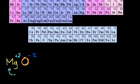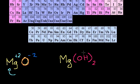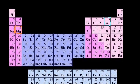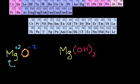Now let's do a slightly harder one: magnesium hydroxide, Mg(OH)₂, where there are two hydroxide groups. My temptation is still to say magnesium likes to lose its two electrons, giving it a +2 oxidation state. In order for everything to work out in a neutral compound, all of the oxidation states have to add up to zero. Oxygen's oxidation state tends to be -2.